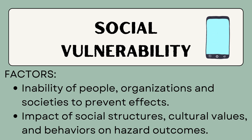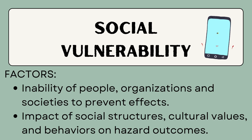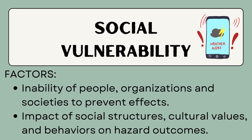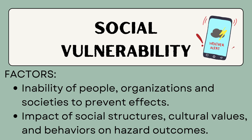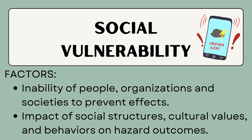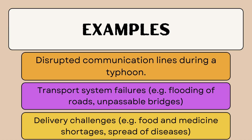Social vulnerability is about how people and communities respond to hazards. Factors include the inability of individuals or organizations to prevent or respond effectively, and the influence of social structures, cultural values, and behaviors on disaster outcomes. Examples include disrupted communication lines during typhoons which delay emergency response, transport system failures like flooded roads and broken bridges, delivery challenges such as food and medicine shortages, and the spread of diseases due to poor infrastructure.